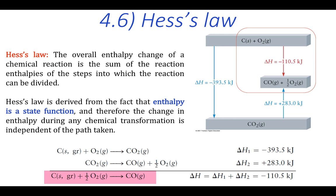If you reduce the oxygen partial pressure enough, you'll get some carbon monoxide, but you'll still produce carbon dioxide as well. That makes it difficult to measure the enthalpy change of this reaction using calorimetry.